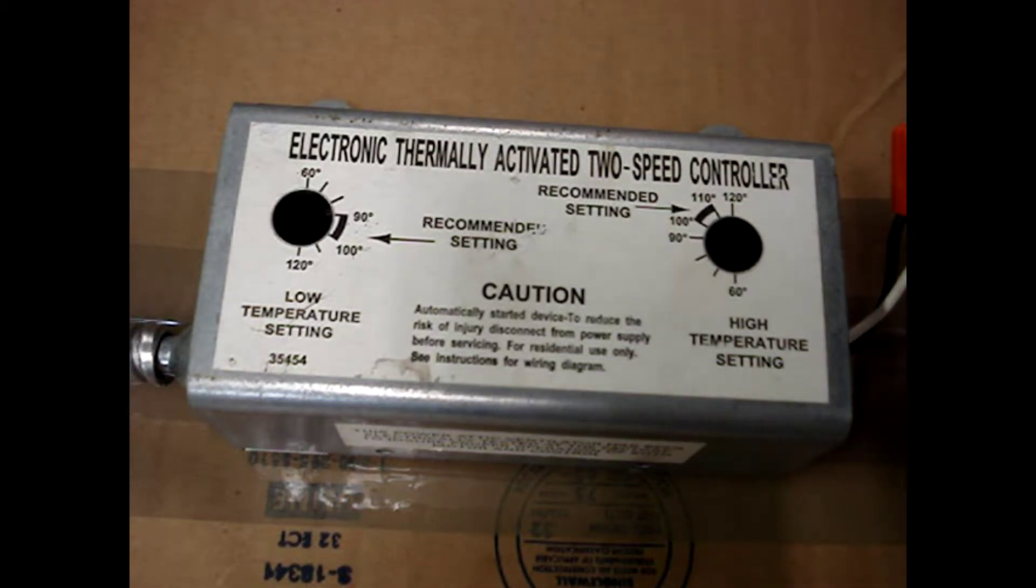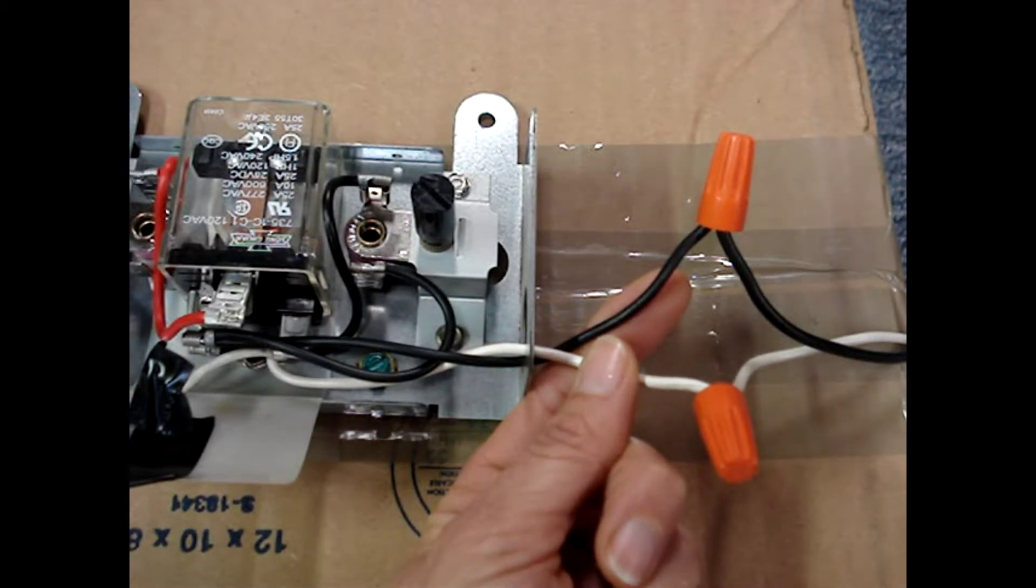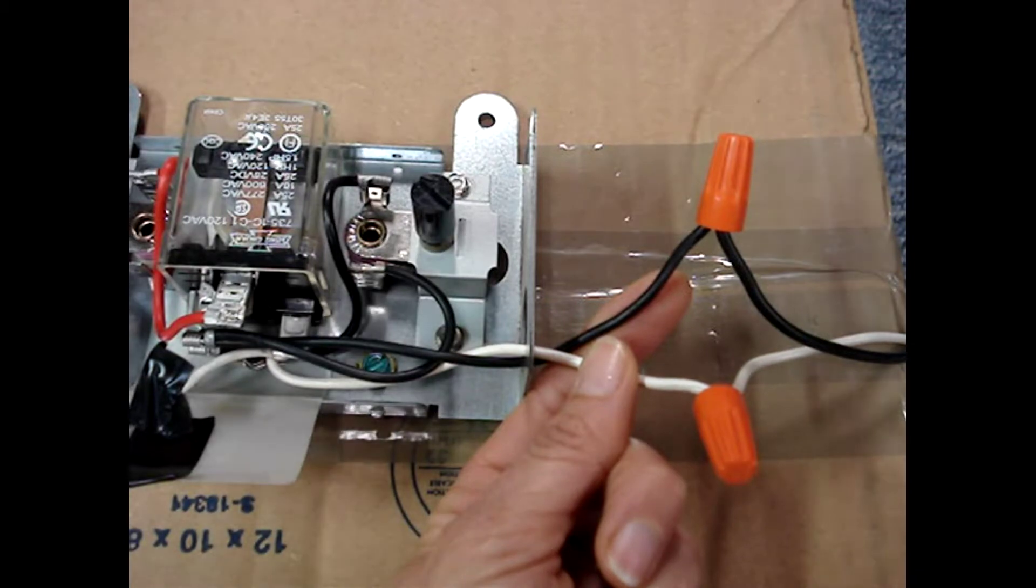This is a controller for a two-speed fan motor. Feeding into the controller is 120 volts AC. Black is the hot wire and white is the neutral wire.